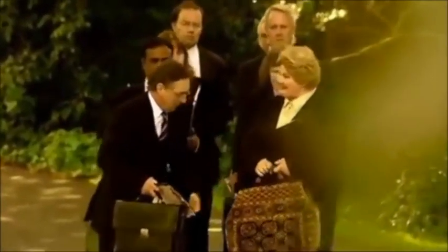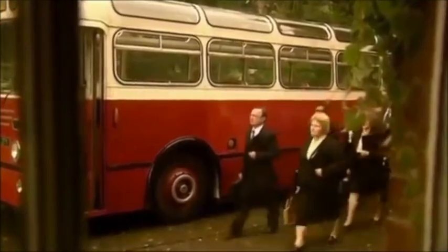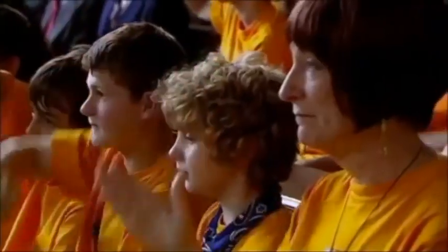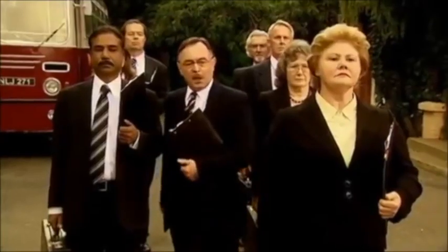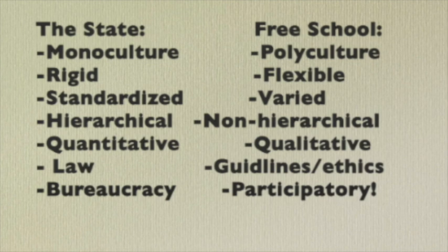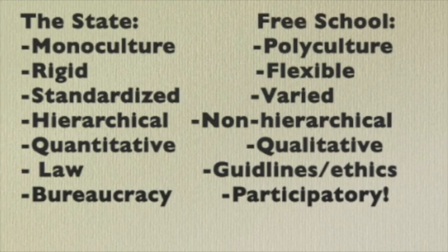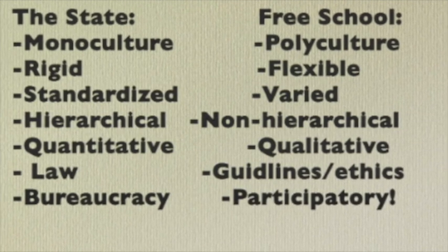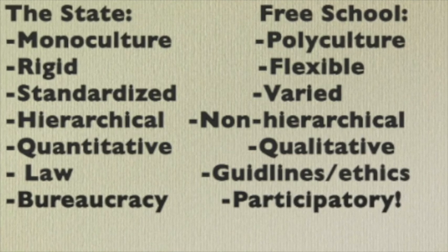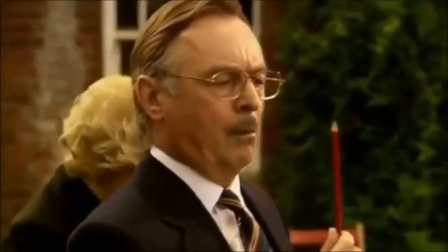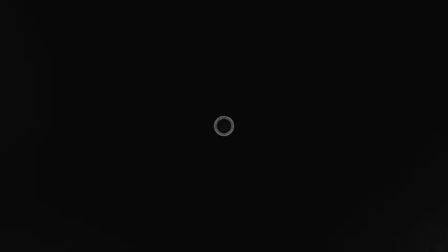Democratic free schools are polycultures — flexible, varied, non-hierarchical, and qualitative. Our schools rely on flexible, shared guidelines and ethics. The state would rather replace those with law. Our schools rely on participatory politics. The state would rather us submit to bureaucratic administration and suppressive regulations. Because of this, we not only don't get financial or political support from the state, but we also often face hurdles that the state is likely to put in our path.